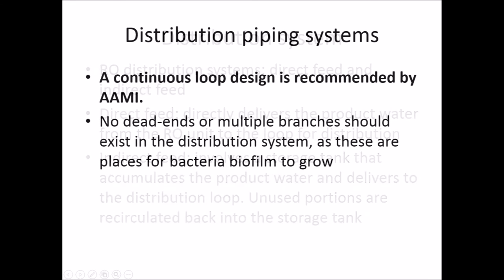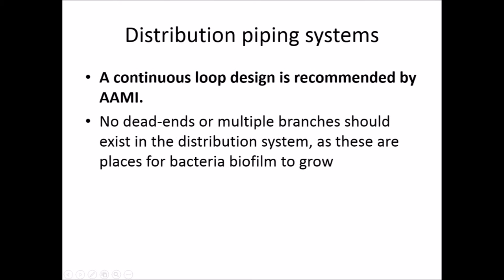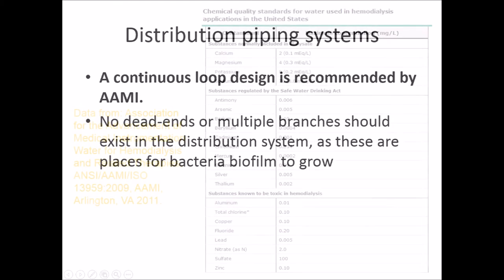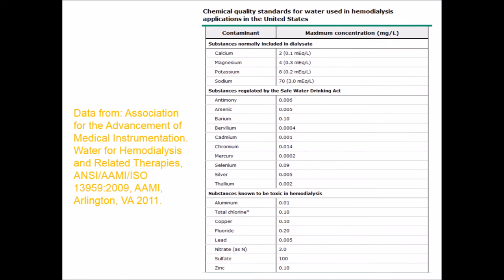The standard is a continuous loop design, recommended by AAMI, with no dead ends or multiple branches in the distribution system, as these are places where bacterial biofilm can grow. Regarding chemical quality standards of water used in dialysis applications in the US, there are a number of substances toxic to the patient with maximum permissible levels. Chemical quality should be tested at least once every six months.